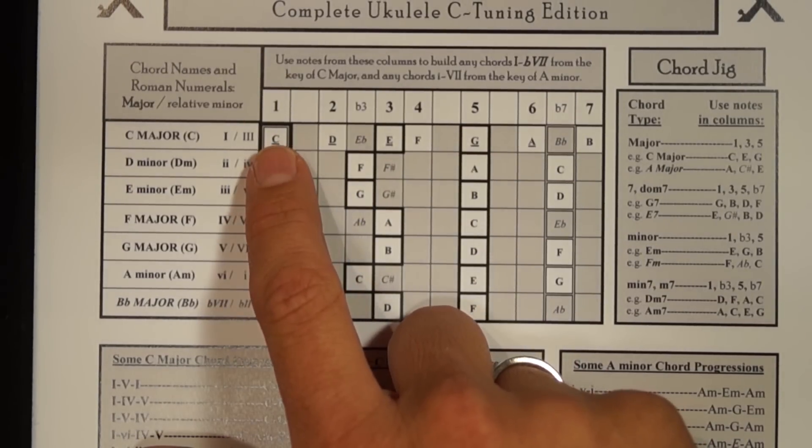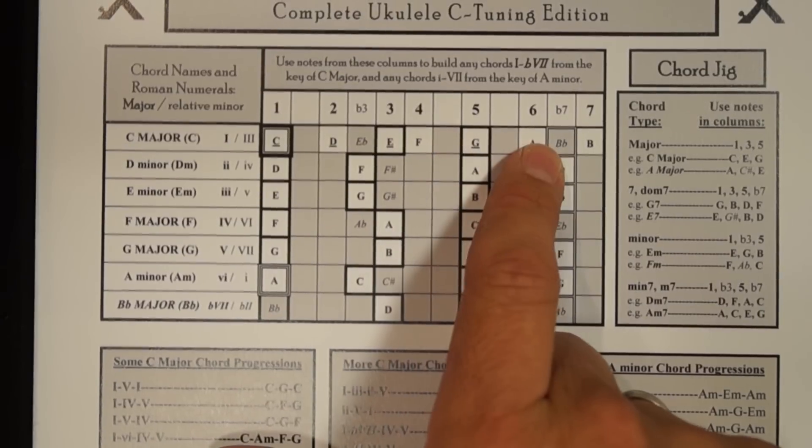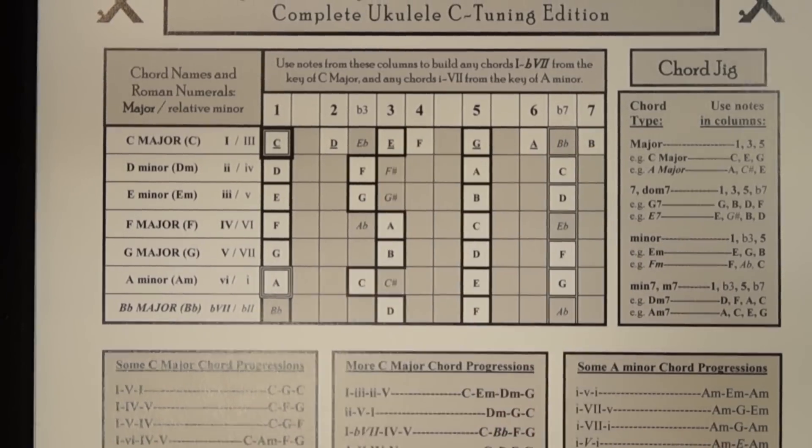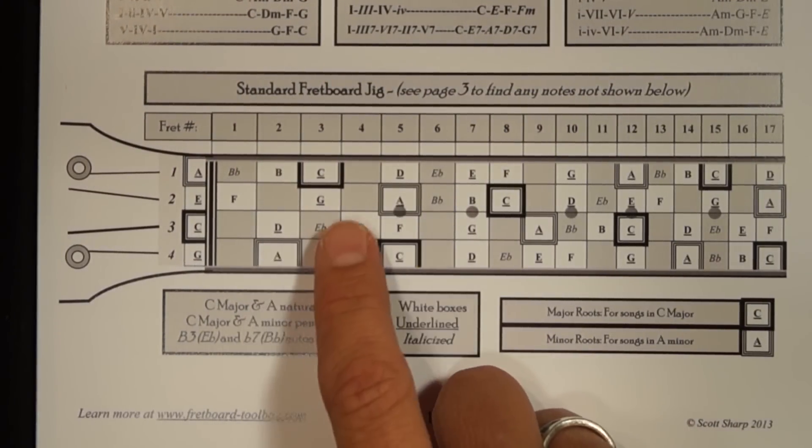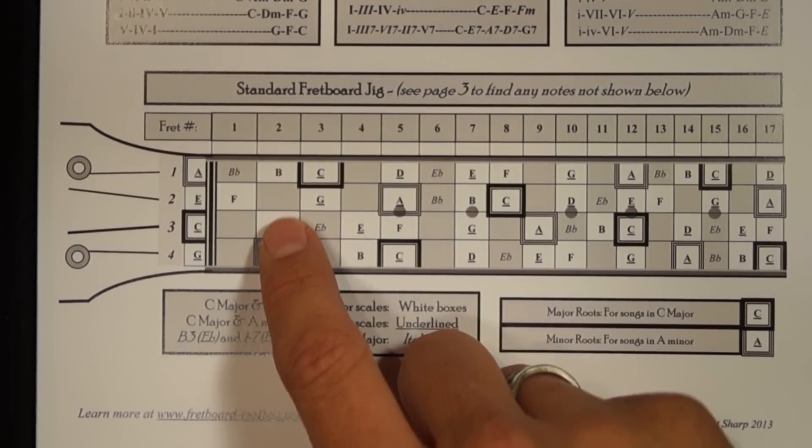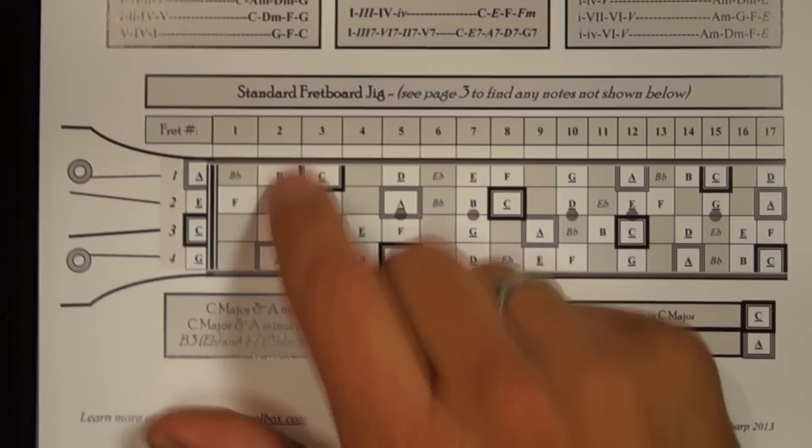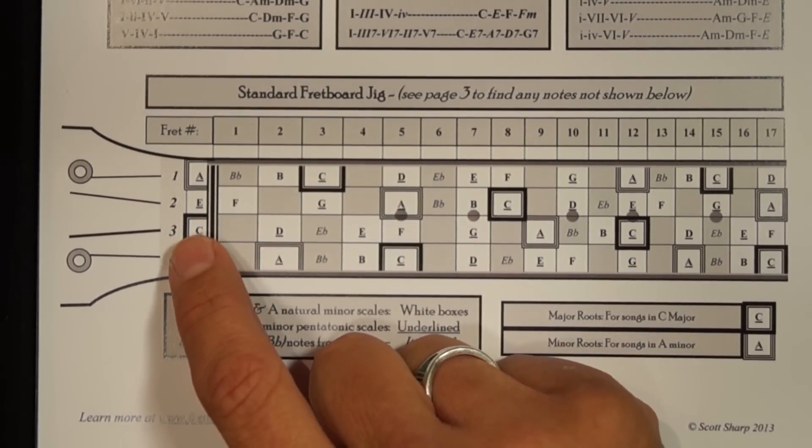And pentatonic scales are made just by taking notes in the 1, 2, 3, 5, and 6 columns. So pentatonic scales skip the 4 and 7 notes in every key. And you hear people in lessons talk about pentatonic scales all the time, so it's important to be able to visualize them. And the nice thing about pentatonic scales is that they don't have a lot of sour notes.